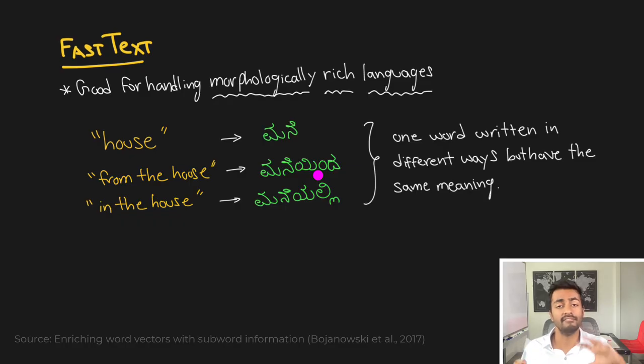Because of this, we want the vector representations to also reflect this by making sure that the vectors for each of these words are as close to each other as possible. Unfortunately though, with Word2Vec, we are going to be treating each of these words as independent vectors completely. There are cases where if one of these words occur, like 'mane' might occur in the corpus, but 'mane yinda' probably doesn't occur. However, we should be able to infer this even though it's not in the corpus at all. In English, you can see that it's all just house. There's no differences. So English here is not a morphologically rich language.